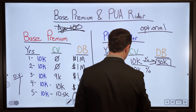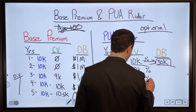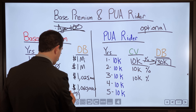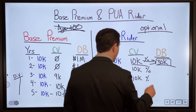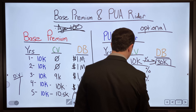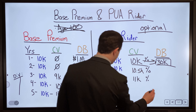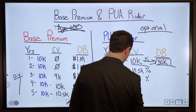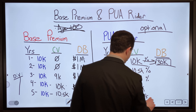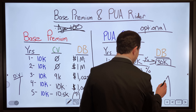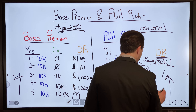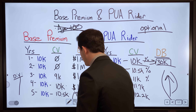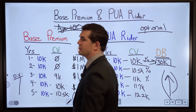Each year you make the $10,000 PUA payment, you begin to yield dividends and interest on that amount. You'll see more and more of that payment come back each year, and it continues to push your death benefit up over time as well.